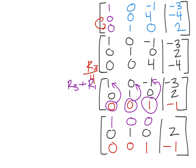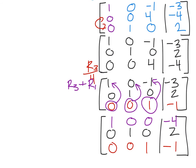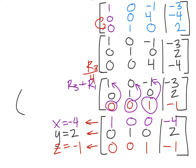Now using that final column, we have negative one added to negative three, which is negative four. And behold, this is our column of answers. Let's pull each of these columns out. So we have x equals negative four, y equals two, and z equals negative one. And as an ordered triple, this would give us negative four, two, and negative one.